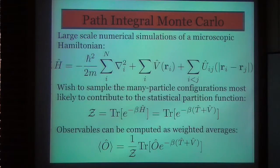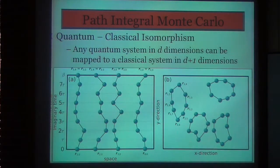So now that you have this Hamiltonian, what you want to do is sample the many particle configurations that are most likely to contribute to the statistical partition function, which is given here as the trace of the quantum mechanical density operator in the energy basis. And once you've sufficiently sampled this statistical partition function, you can calculate pretty much any observable quantity of interest as just an average or trace of the product between that observable's quantum mechanical operator and the density operator. So how does path integral Monte Carlo sample these configurations in an efficient way? It can broadly be summarized as exploitation of the quantum classical isomorphism. What that tells you is that any quantum system in d dimensions can be mapped to a classical system in d plus one dimensions.